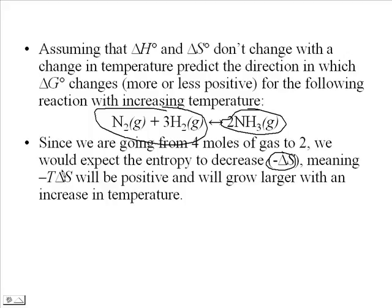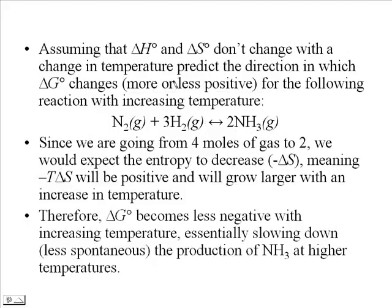If delta S is negative, then the negative T delta S term is positive. So as temperature increases, that term becomes more positive, which means delta G also becomes more positive — or less negative. Increasing temperature actually slows down that reaction and causes it to be less spontaneous in the forward direction.